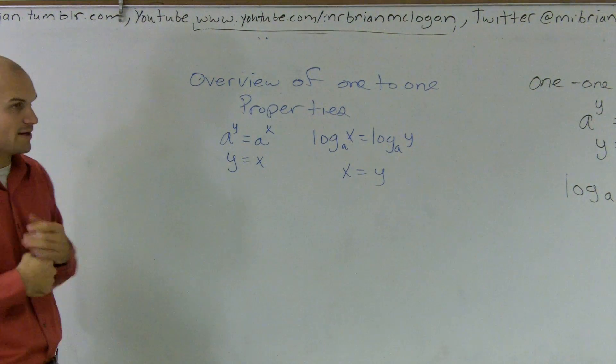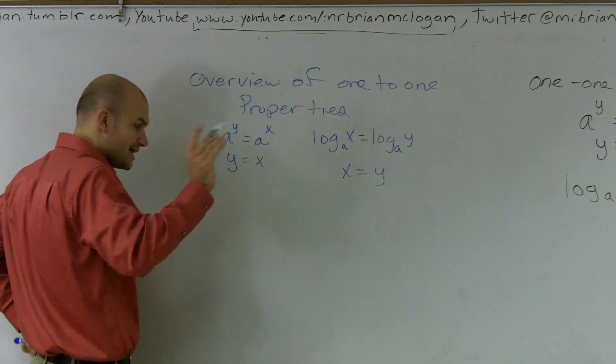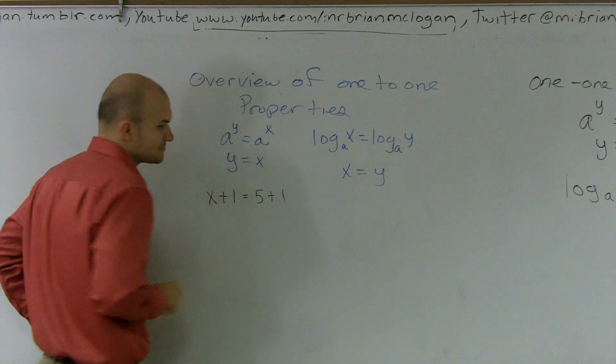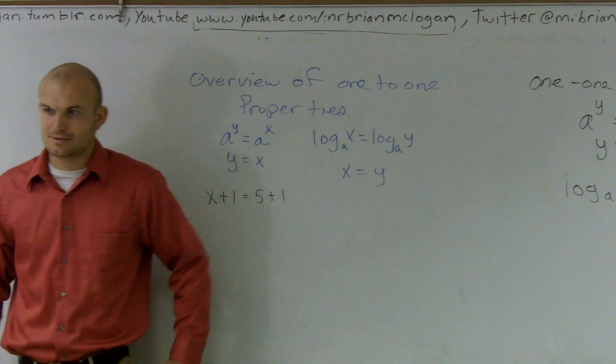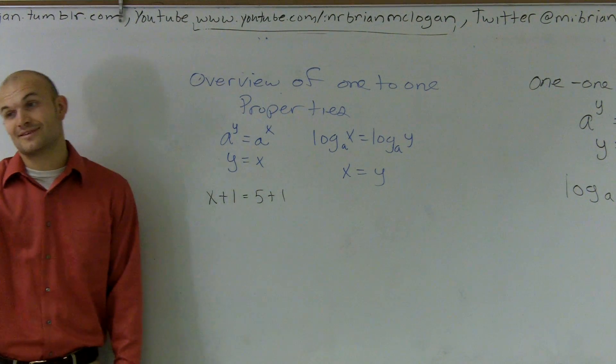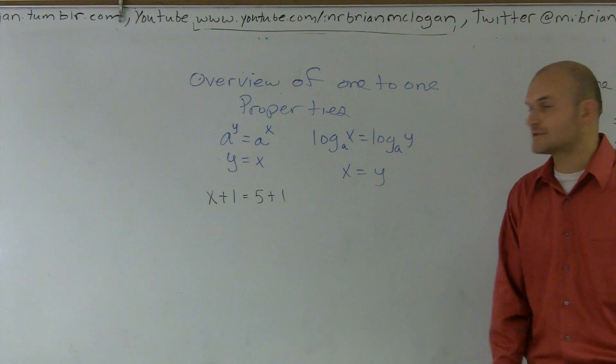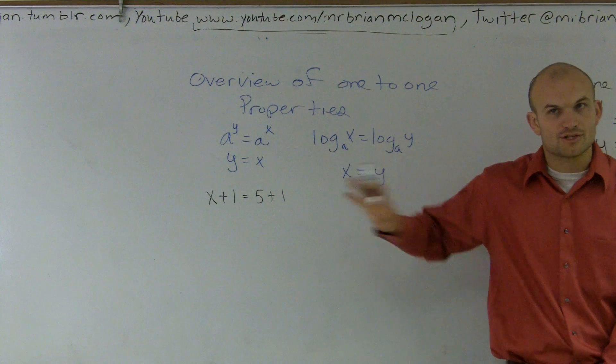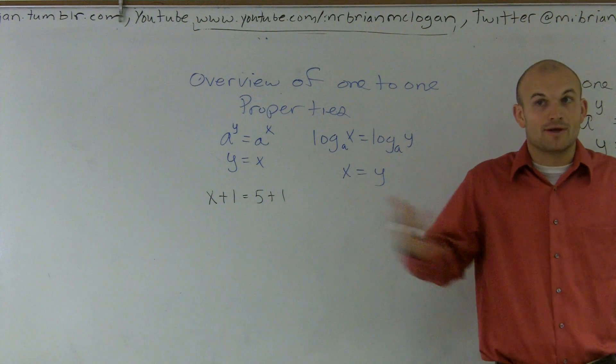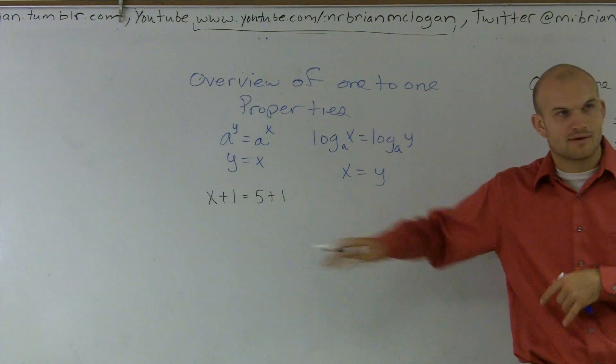So let's first talk about this one, because I think this one's the easiest to understand. Let's say I have x plus one equals five plus one. If I look at this, if I say x plus one is equal to five plus one, knowing just what you guys know right now, the only possibility for x to be is, there's only one number x can be, right? X has to be five. That's fairly simple, you guys understand that, right?